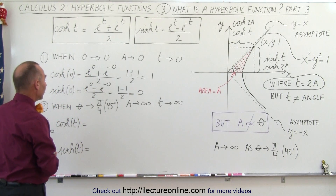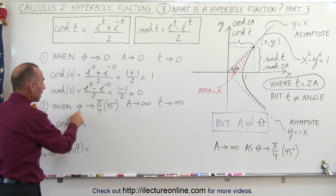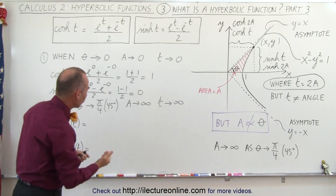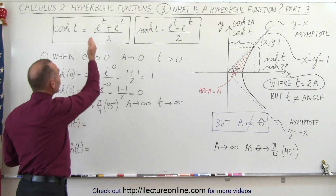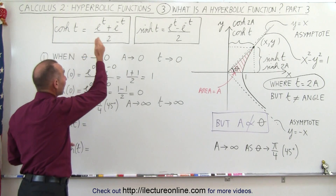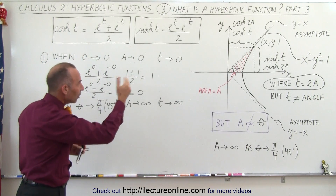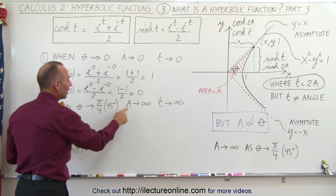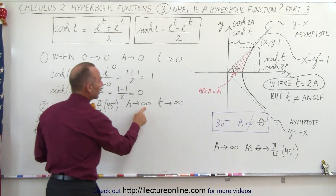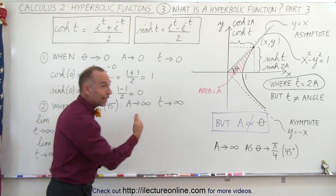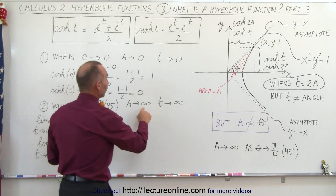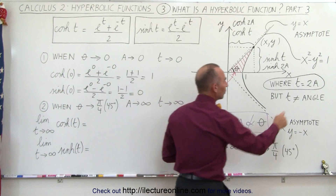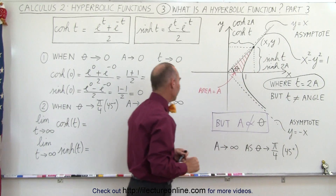So that seems to make sense. Now we're going to let the area increase, and we realize that the angle theta — which is not really something we use in the hyperbolic functions, since we use values like t which represent an area — when we let that angle go to 45 degrees, the area will go to infinity. We'll show later why that is so. Therefore, if the area goes to infinity, t goes to infinity, because t is equal to twice the area.